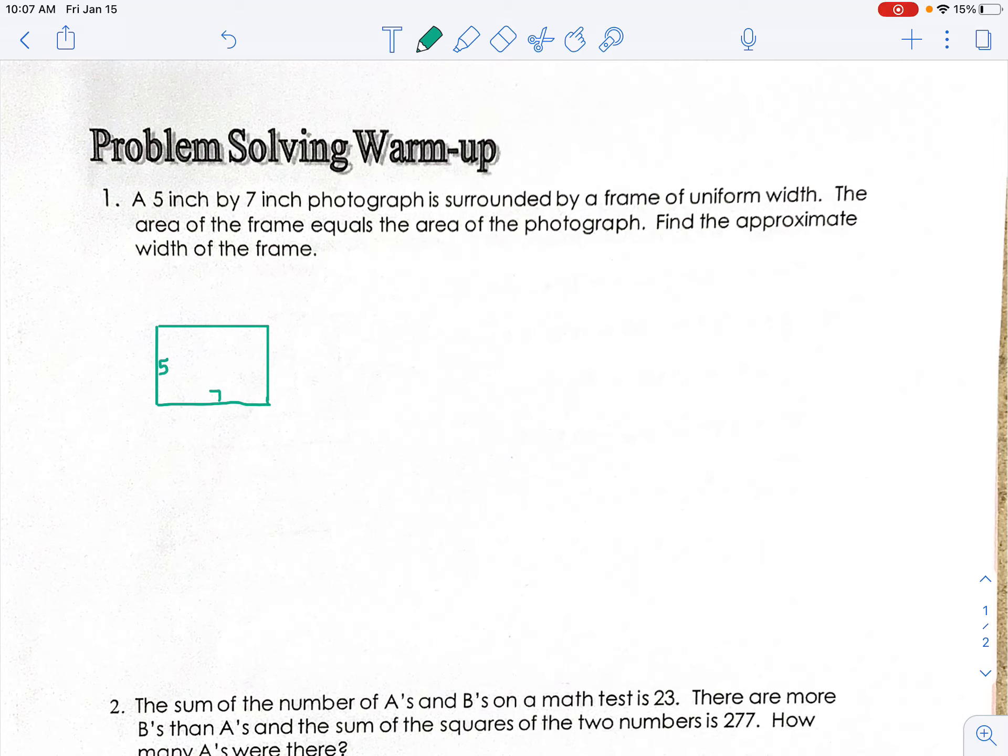So it's 5 by 7. All right, real quick, we could probably find the area of that. 5 times 7 is 35 inches squared. So we know the area of that is 35 inches, and it's surrounded by a frame of uniform width, which means it's kind of in the center of our frame here. So here's our frame.